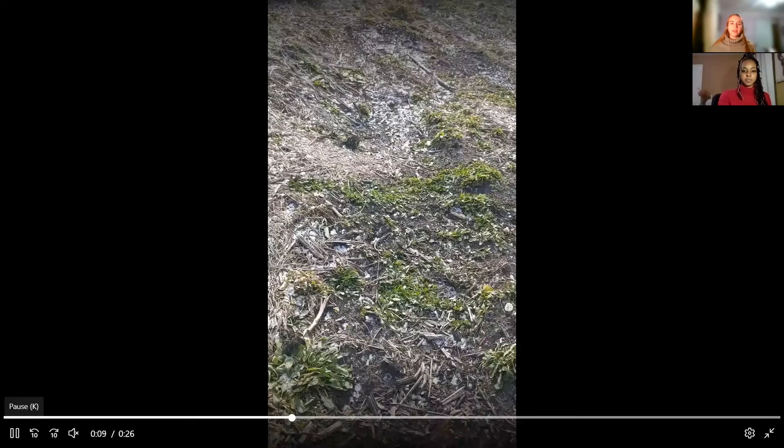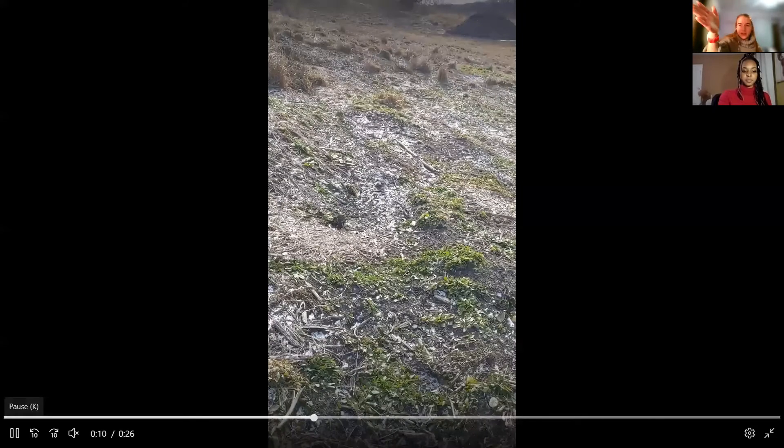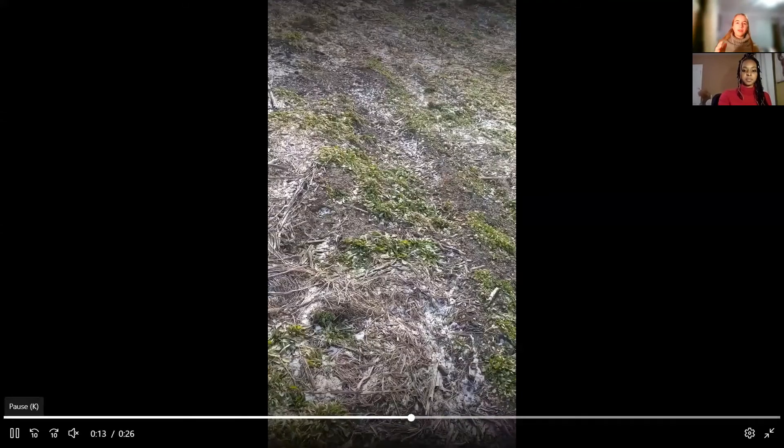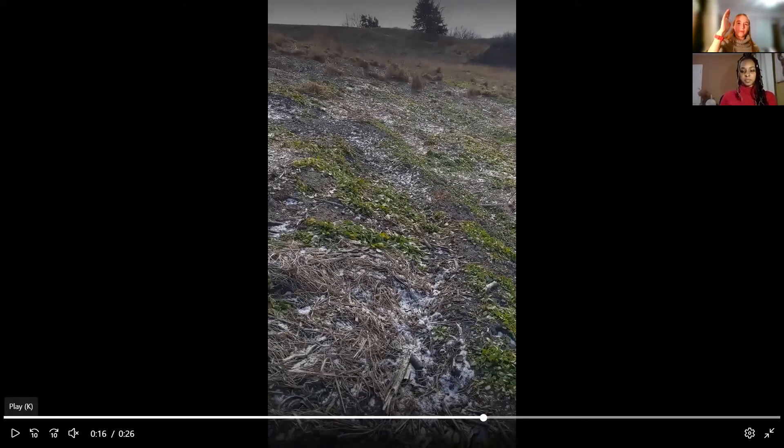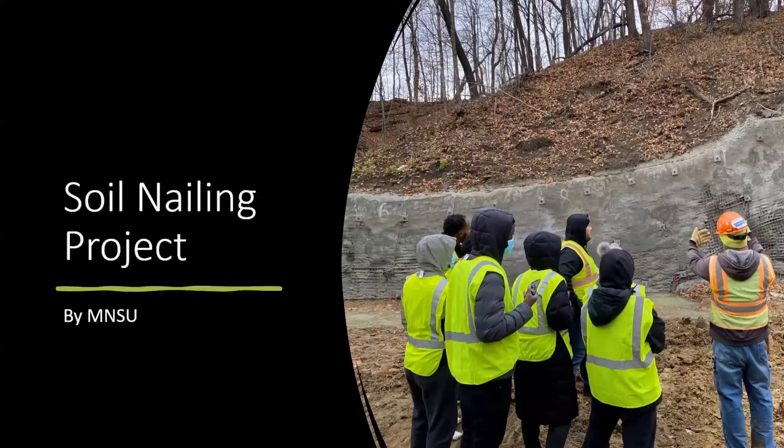I think we should start off with the field video. You can see that we have cracking going horizontally across here, which means we have an active slope. This behavior was also seen at the bottom of the slope, meaning that we have ground moving. Let's take a look at what's going on.